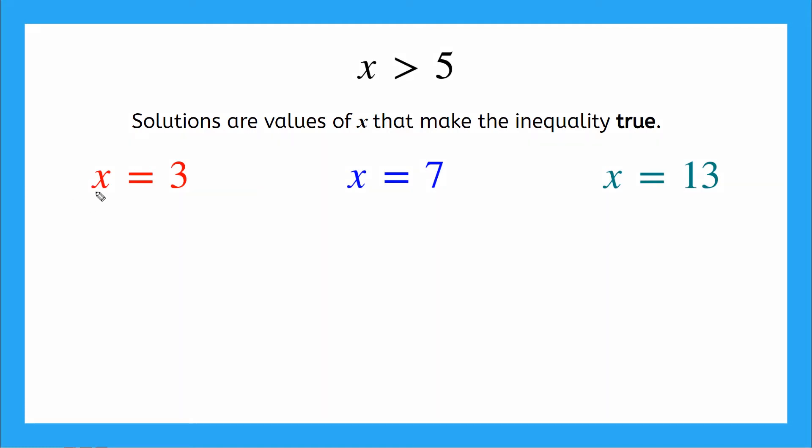So our first possible solution says x equals 3. And I'm going to plug 3 into my original inequality here. So I'll have 3 is greater than 5. Is that a true statement? No. 3 is actually less than 5. So that means x equals 3 is not a possible solution here.